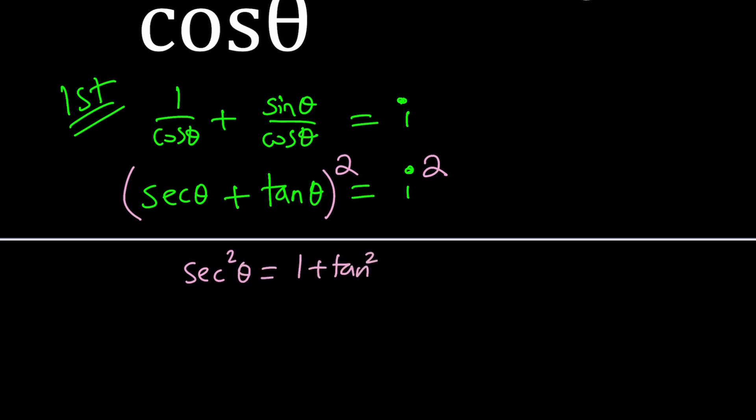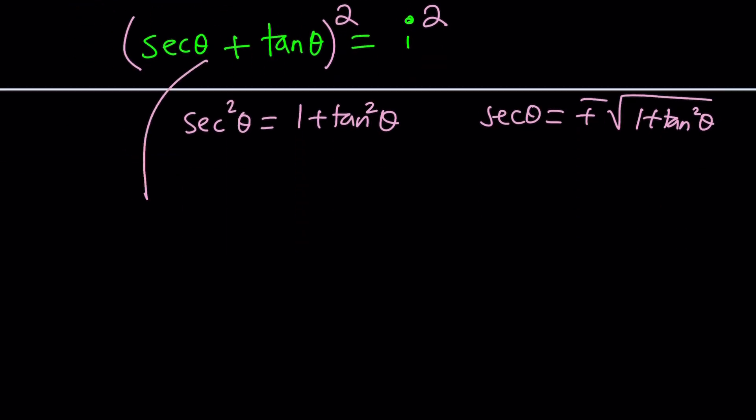You could also write secant as the square root of 1 + tan²θ with a plus-minus sign, but that wouldn't be very desirable because you would still need to square both sides to get rid of the radical. So now we have something nicer: expanding gives us sec²θ + tan²θ, which is a² + b², plus 2·sec θ·tan θ, and the whole thing equals i² = -1. Remember, i² is -1. That's something you should definitely know.